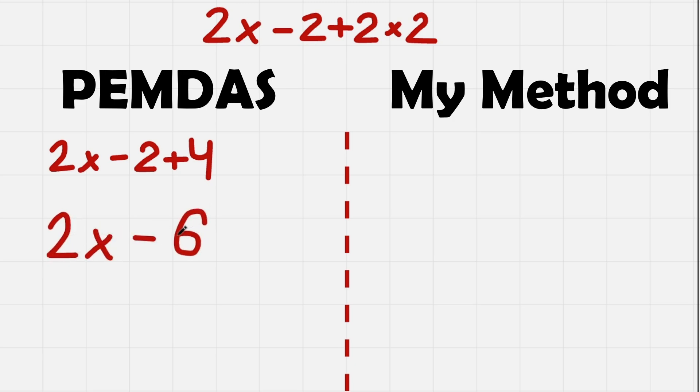And this solution is incorrect. So let's see why exactly this is incorrect while solving this equation using my method. This method includes dividing the equation into smaller terms. Terms are little equations that are separated with plus. So in this case we have 2x as a first term, minus 2 as a second term, and 2 times 2 as a third term.